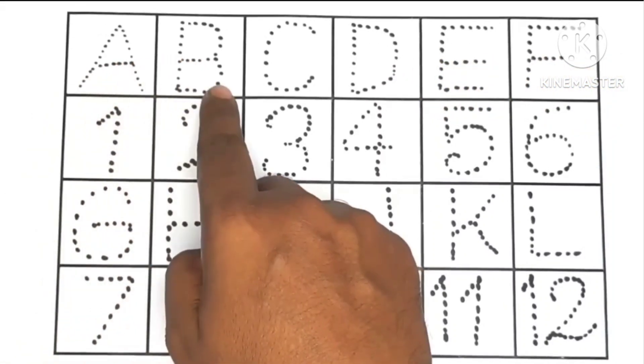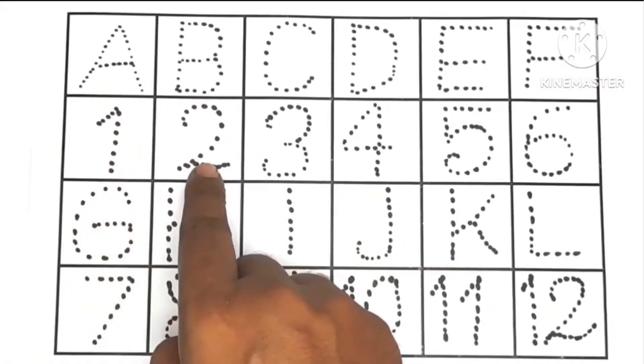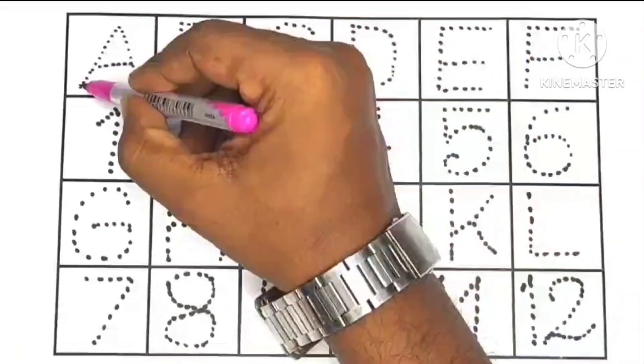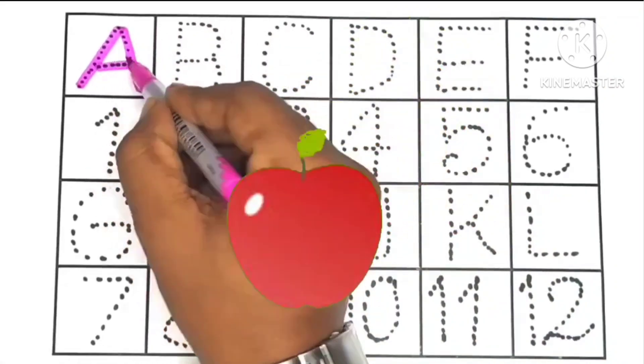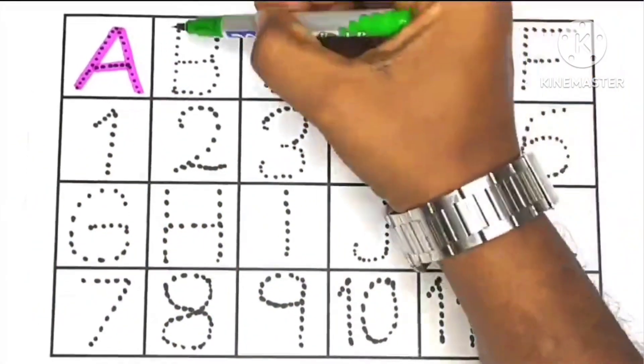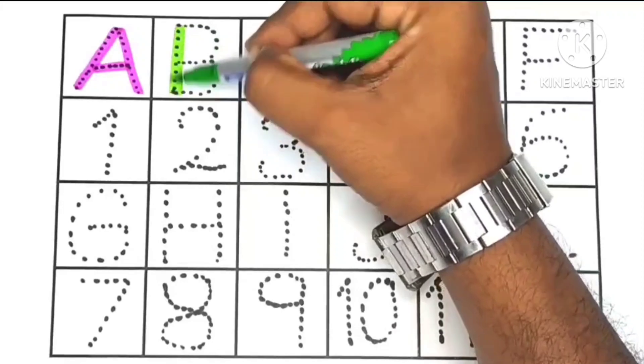B for... 1, 1, 2. This is A, A for apple, B.